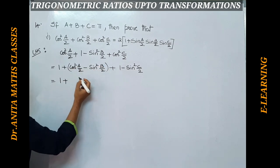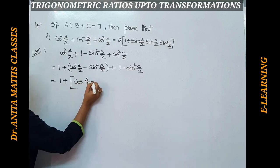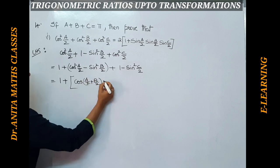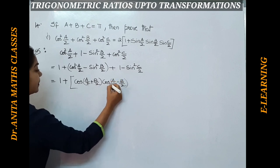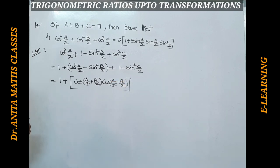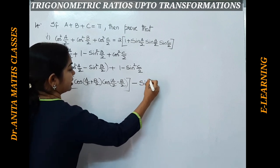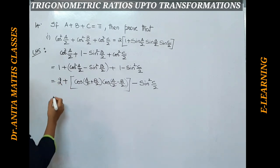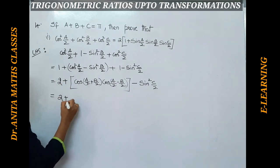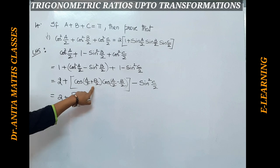Group cos²(a/2) - sin²(b/2) and apply the transformation: cos²A - sin²B = cos(A+B)·cos(A-B). So we get cos((a+b)/2)·cos((a-b)/2), plus 1 - sin²(c/2), and the two ones add to give 2.